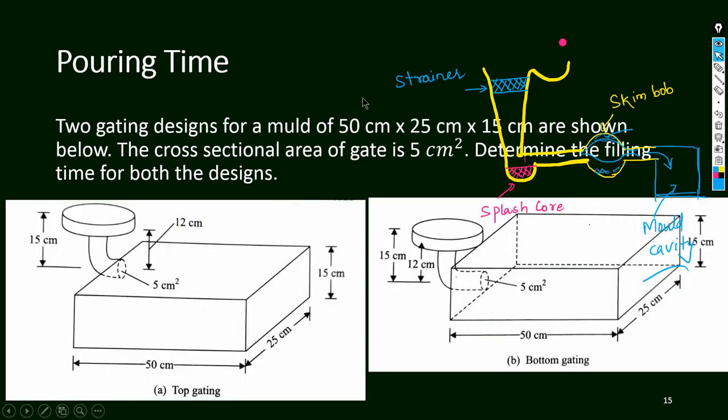So the three accessories are: strainer, splash core, and skim bob. For today this much only, and in the next class we will talk about and calculate the pouring time.